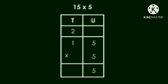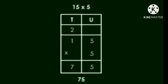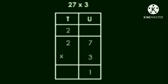Now, 5 into 1, 5. And we will add this 2. So, 2 plus 5, it is 7. So, the answer is 75.